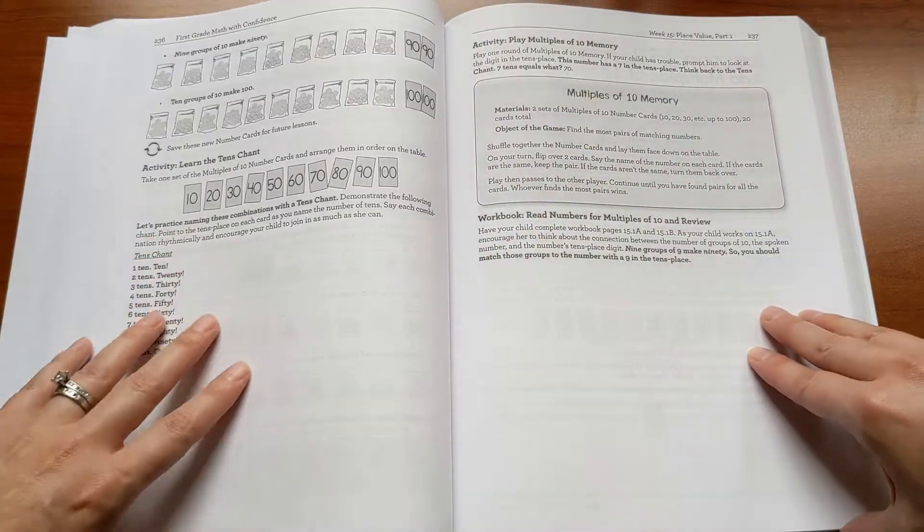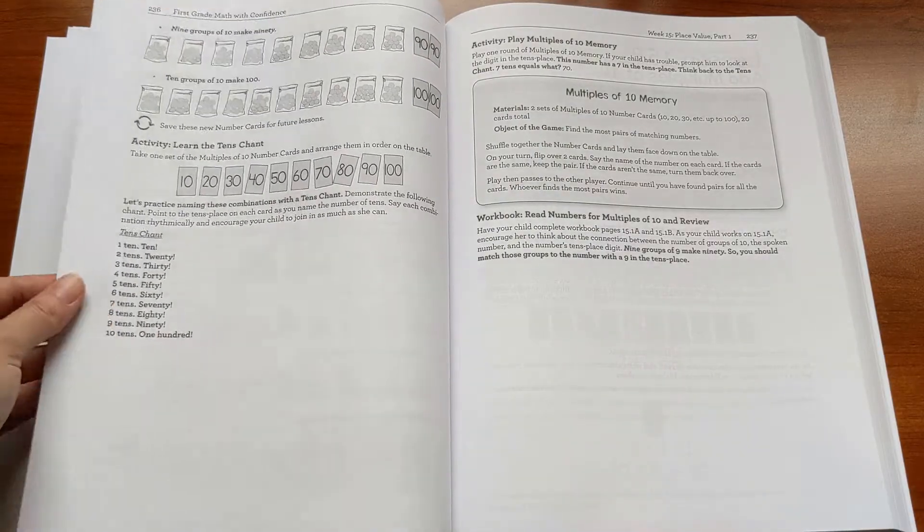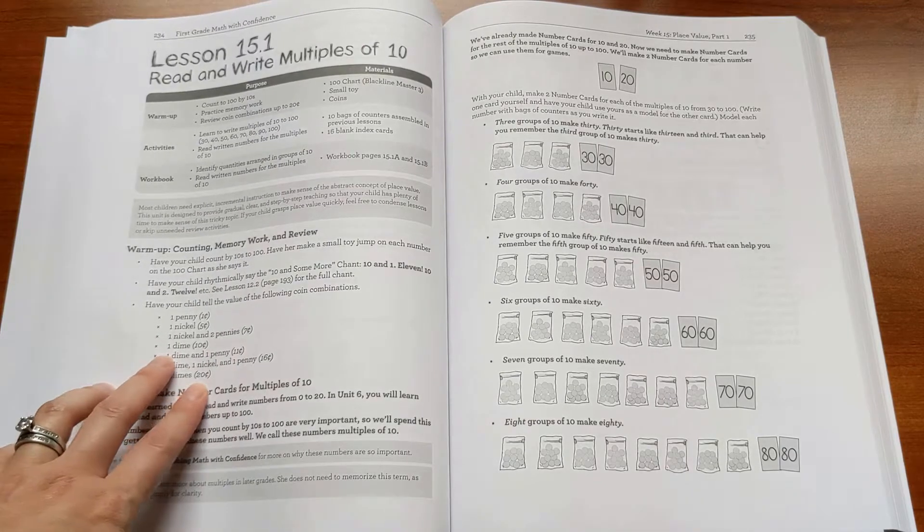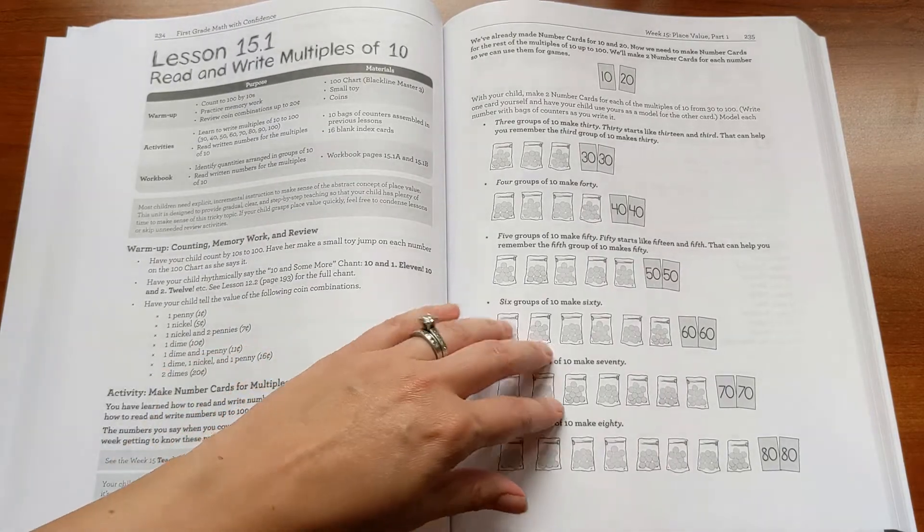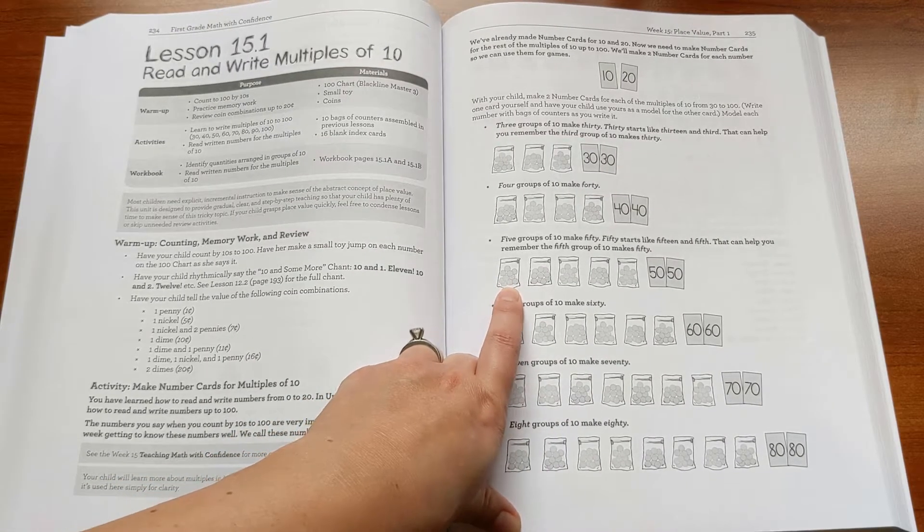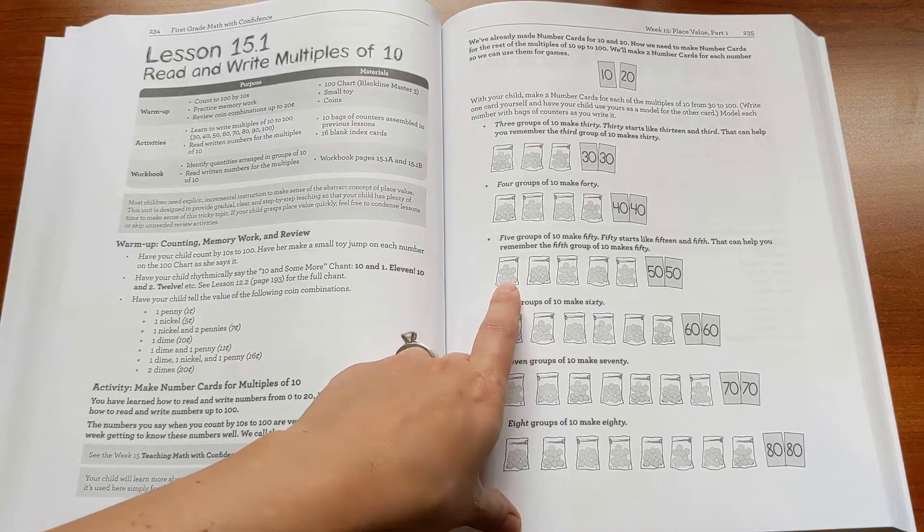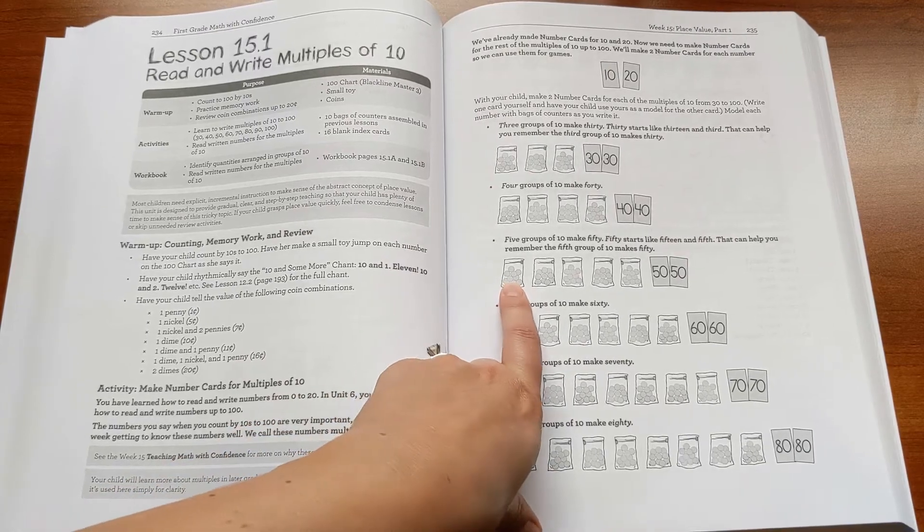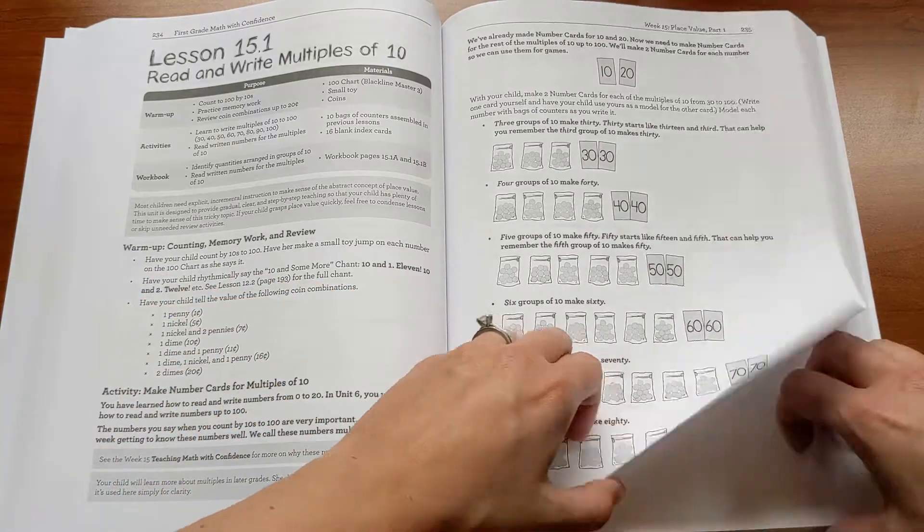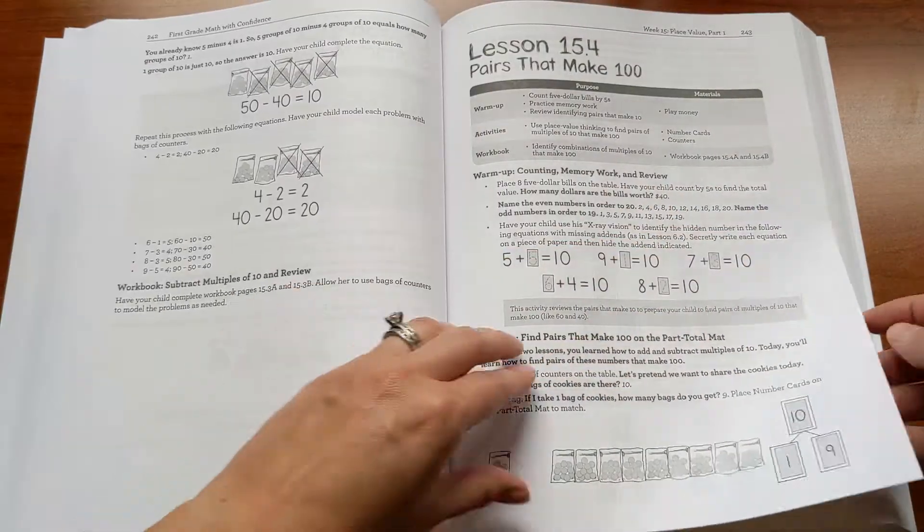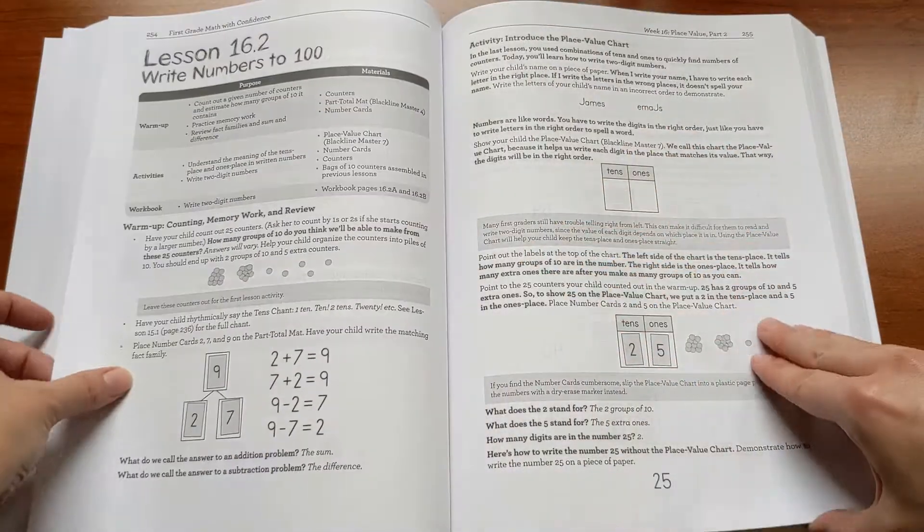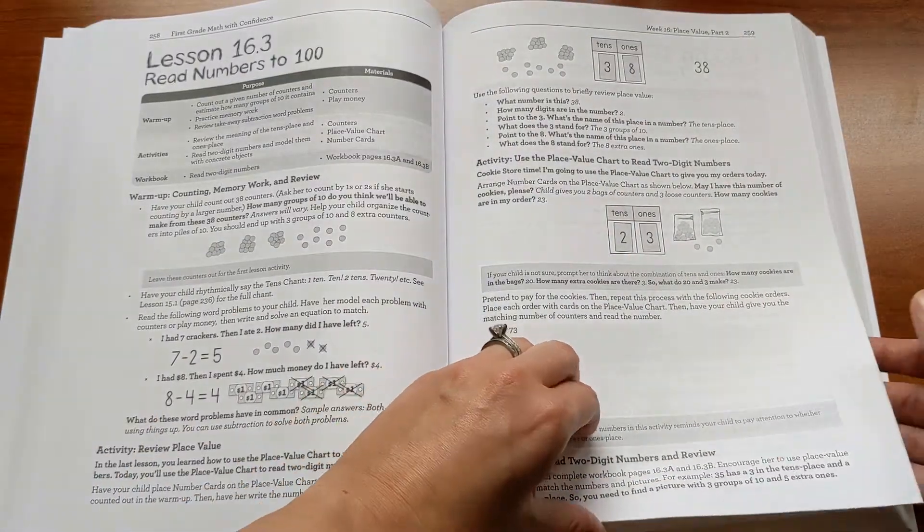And then as the year progresses, we start to get more into the numbers to 100. A lot of first grade is about really understanding two-digit numbers. Place value is such a tricky concept for first graders. And so we'll have the cookie store going here in week 15, where you'll put 10 counters in a Ziploc bag and use those to help your child understand that 5 tens equals 50. And then build from there to understand pairs that make 100. And by the end of the year to do some mental math with those numbers.